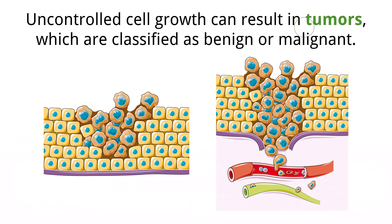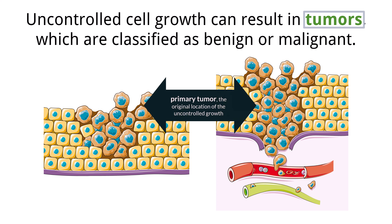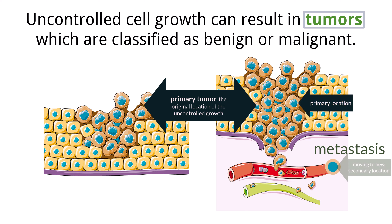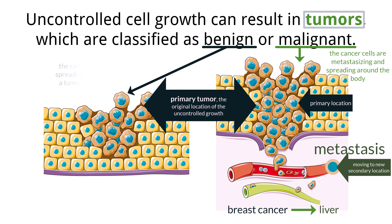While tumors are masses of cells that have undergone uncontrolled cell division, not all tumors are alike. A primary tumor is the mass of cells that occur at the original site of the cancer. A secondary tumor is when metastasis has occurred — metastasis is when cells from the primary tumor travel to another location and begin to grow. For example, breast cancer may metastasize to the liver. Tumors that cause cancer are called malignant, while benign refers to tumors that do not cause cancer. Benign tumors do not metastasize, while malignant tumors can.